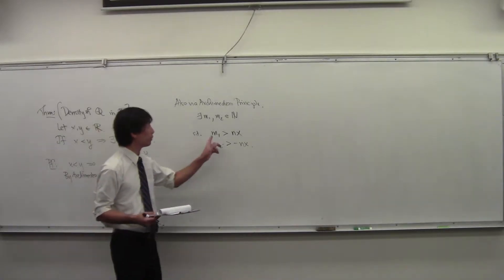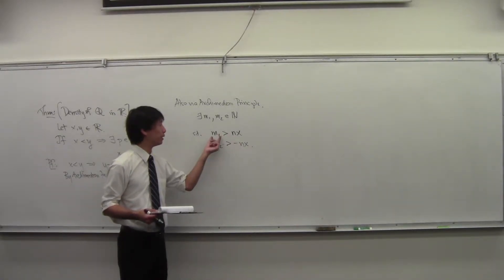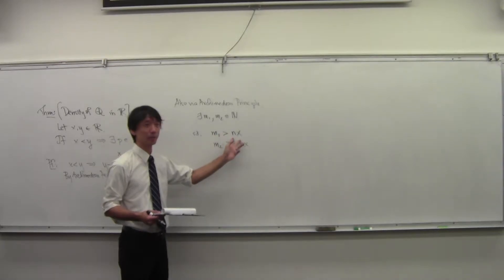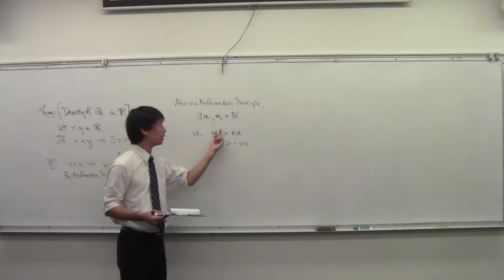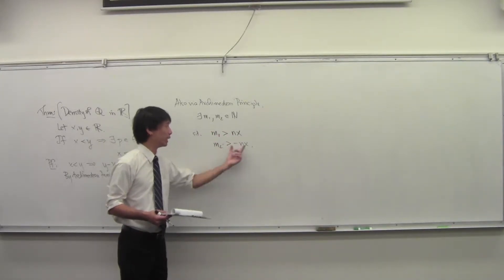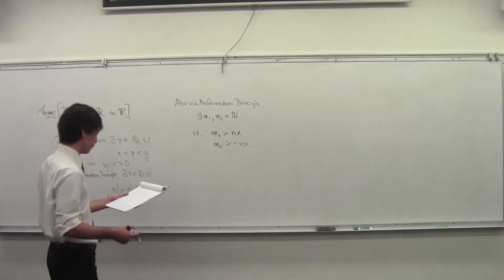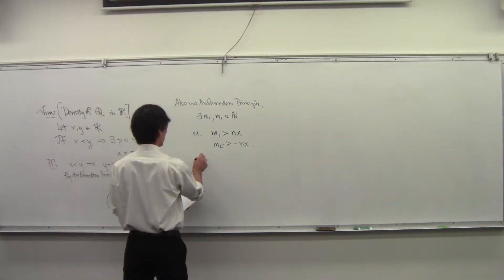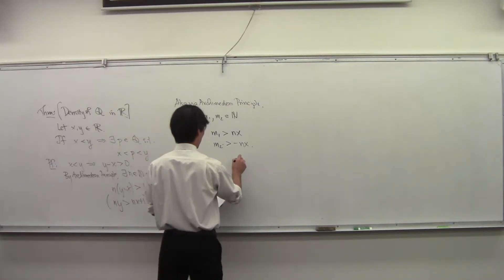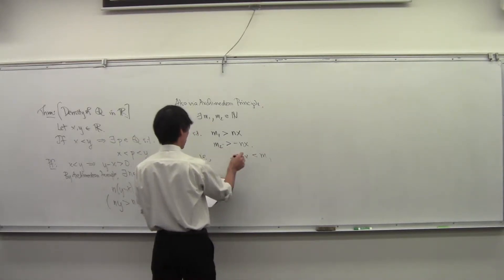It's the same thing - we take NX and 1. We know that some multiple of 1 is going to exceed NX. Some multiple of 1 exceeds negative NX. In other words, NX is trapped between M1 and negative M2.